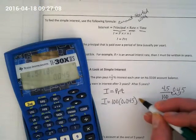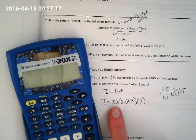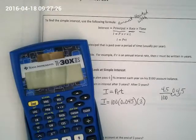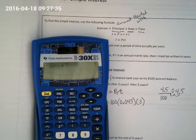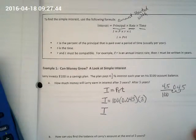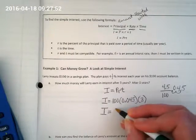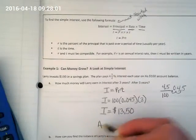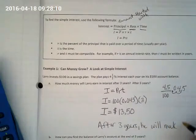And the time is how many years? Three. First we're going to do it with three years. If you have a calculator handy, go ahead and calculate this with me: we're going to enter 100 times 0.045 times 3. What is his interest after three years? I got 13.5, which is $13.50. So after three years he will make $13.50.